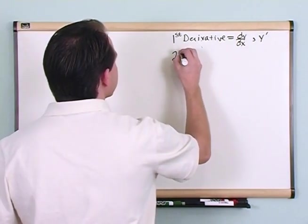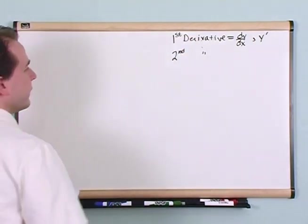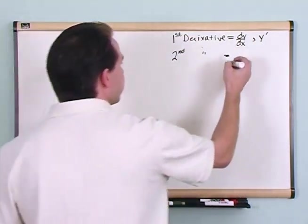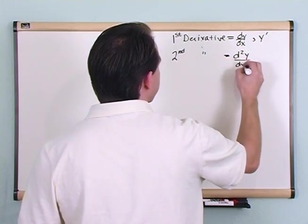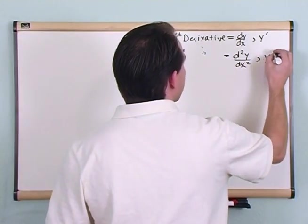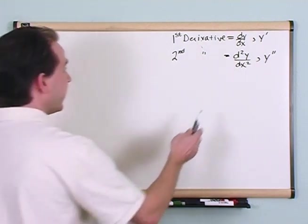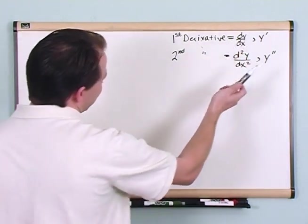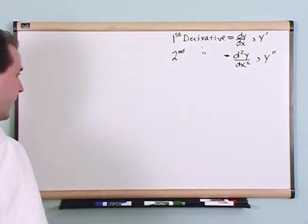The second derivative — these little lines here mean derivative — you would write as d²y over dx², and you would also write that as y with two little primes. So this is the big picture way you write this stuff down: the derivative of y with respect to x, and in this case the second derivative of y with respect to x.